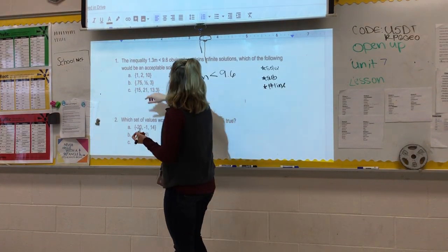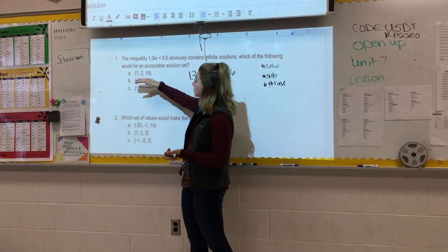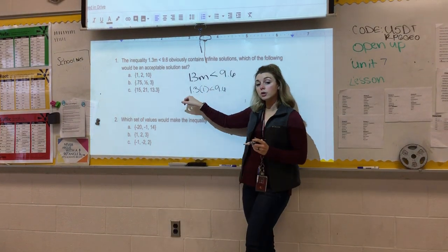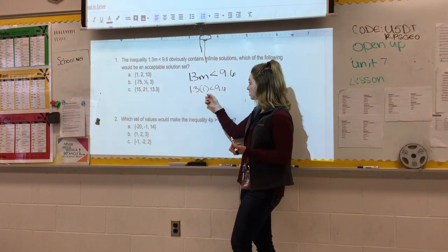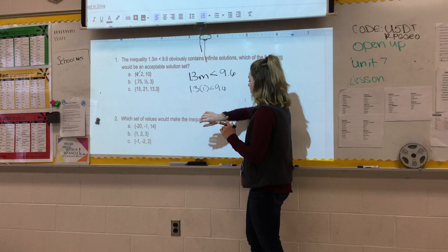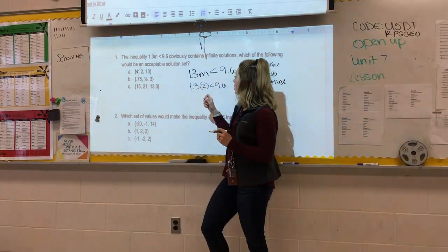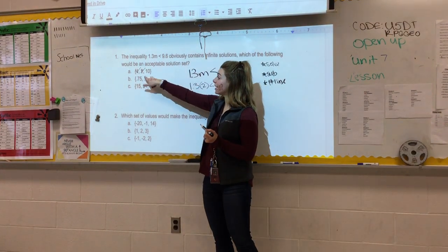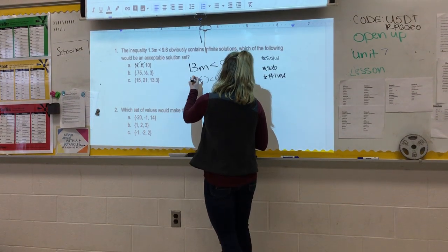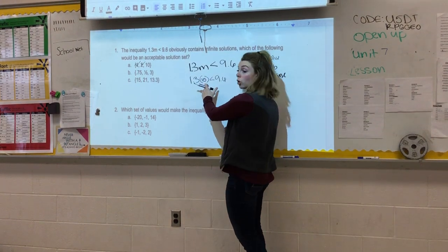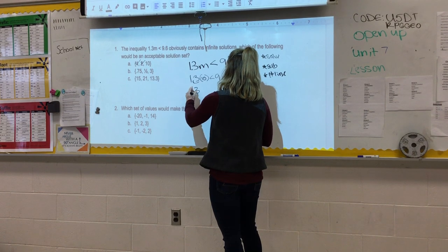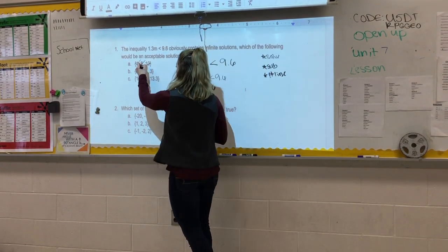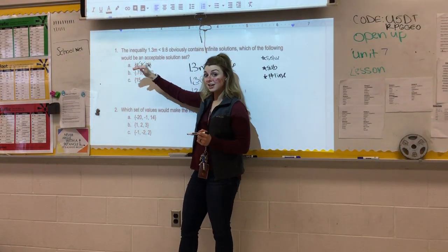But I think for this one, substitution is going to be the fastest, most efficient and easiest way to get your answer. So let's start with answer choice A. I'm going to substitute 1 for m. So I'm going to put 1.3 times 1 is less than 9.6. So if we do 1.3 times 1, we're going to get 1.3, which is less than 9.6. So that works. If we change that to a 2, we get 1.3 times 2, which is 2.6, which is still less than 9.6. So that works. If we try the next solution in this solution set, we do 1.3 times 10, which gives us 13 is less than 9.6. And is this true? Absolutely not. So 10 would not work. Therefore, even though these first two work, A cannot be the answer.